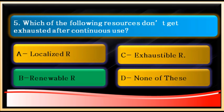There is one more term for this: those resources are also called inexhaustible resources. Forests and trees are inexhaustible resources. Keep in mind: renewable resources and inexhaustible resources refer to the same thing. Option A — localized resource — is wrong, and exhaustible resources get exhausted, so that is also wrong. The answer for question five is renewable resources.